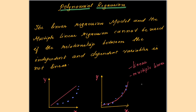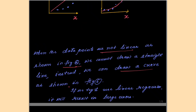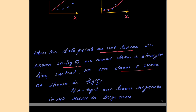Now let us move to the next type: polynomial regression. The linear regression model and the multiple linear regression cannot be used if the relationship between the independent and dependent variables is not linear. So when the data points are not linear, as shown in figure A, we cannot draw a straight line — instead we can draw a curve.